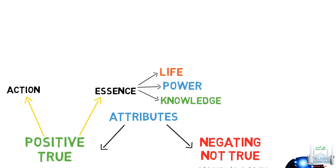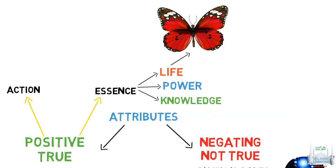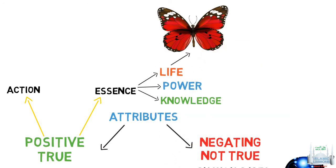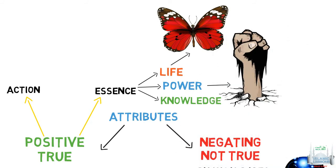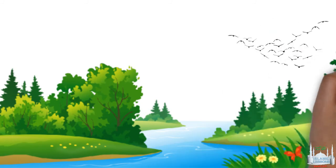The simple proof is that when these attributes are used for any creation, they refer to their perfections. For example, if a necessary existent does not have life, therefore it cannot give life. If a necessary existent does not have power, then it cannot give power. But as we see in creation there is life, power, and knowledge.